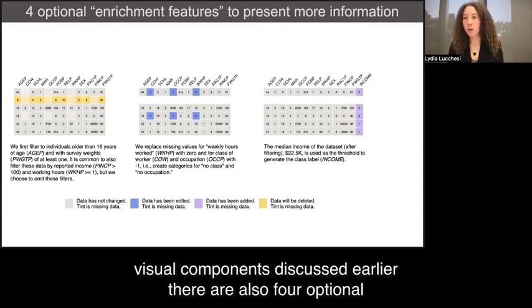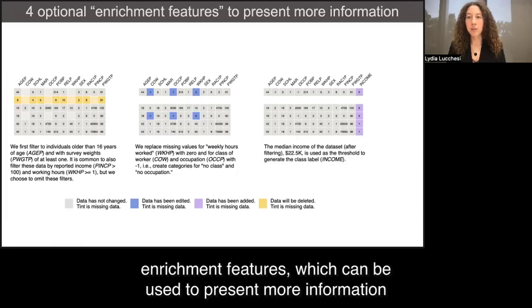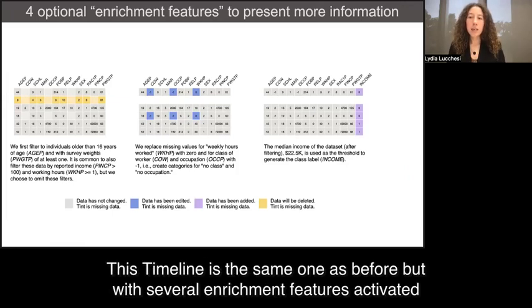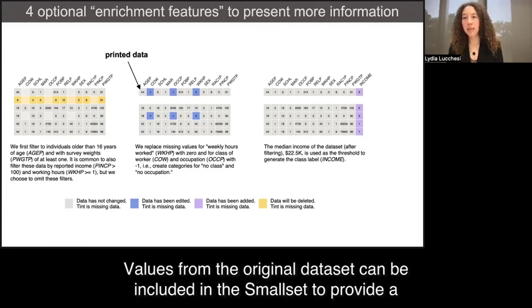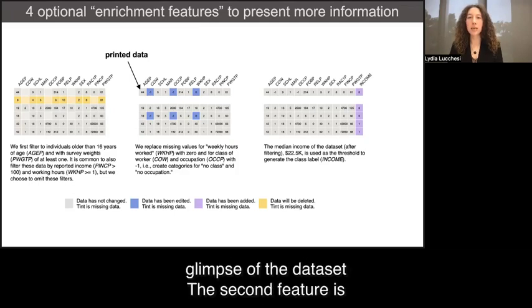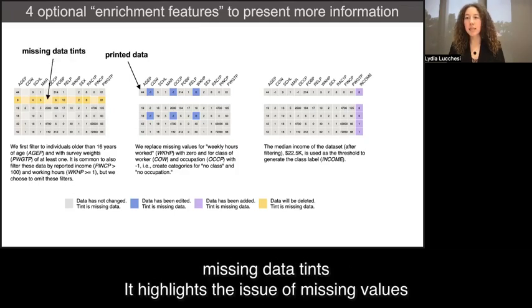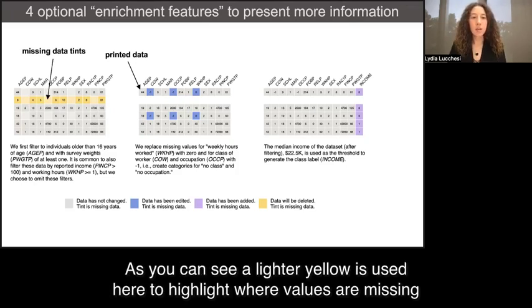In addition to the three core visual components discussed earlier, there are also four optional enrichment features, which can be used to present more information. This timeline is the same one as before but with several enrichment features activated. The first is printed data. Values from the original dataset can be included in the small set to provide a glimpse of the dataset. The second feature is missing data tints. It highlights the issue of missing values. And as you can see, a lighter yellow is used here to highlight where values are missing.